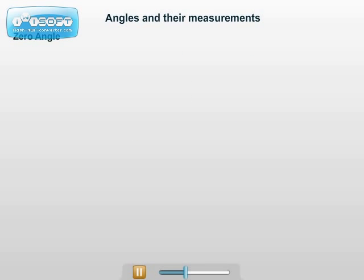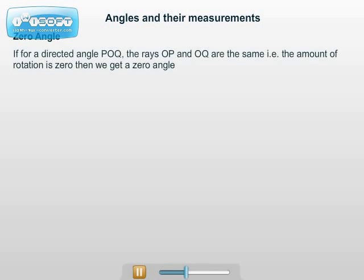Zero angle: If for a directed angle POQ, the rays OP and OQ are the same, that is the amount of rotation is zero, then we get a zero angle.